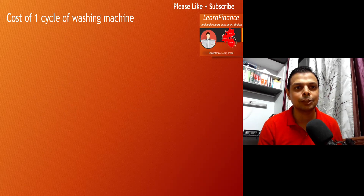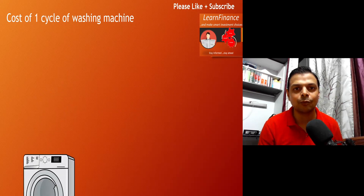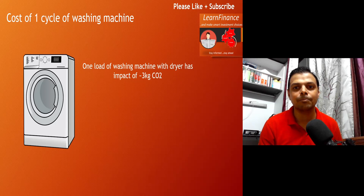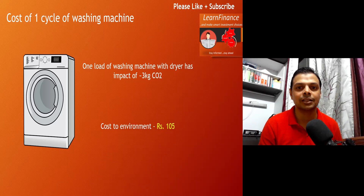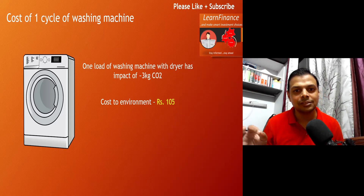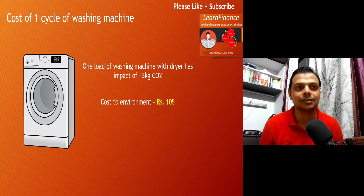Let's also look at the impact of something as basic as one cycle of a washing machine. One load of washing machine with a dryer has an impact of 3 kgs of CO2 on the environment, which means a cost to the environment of almost 105 rupees. If we do not use the dryer in the washing machine, this impact is going to come down to almost one third.